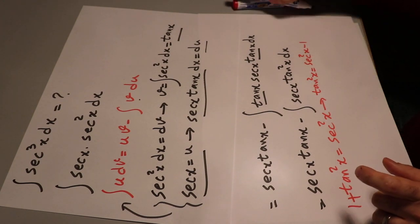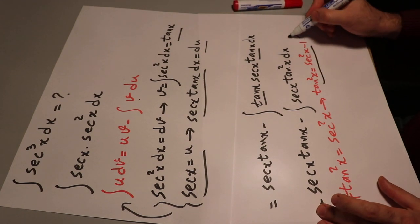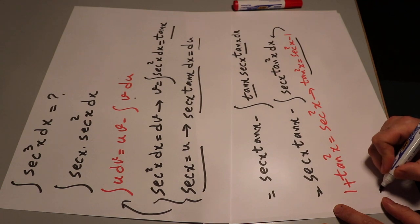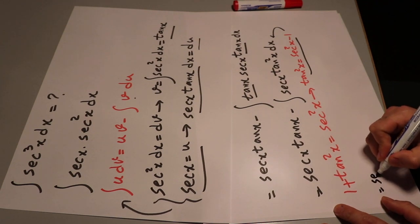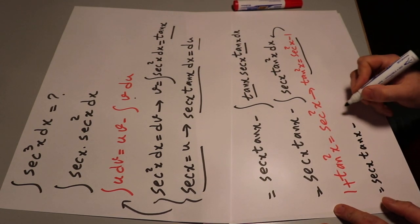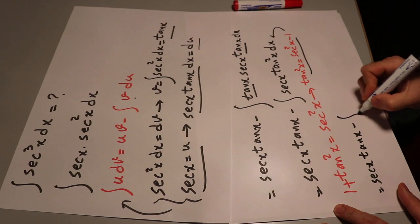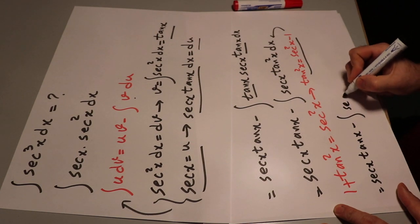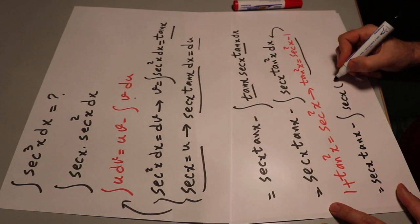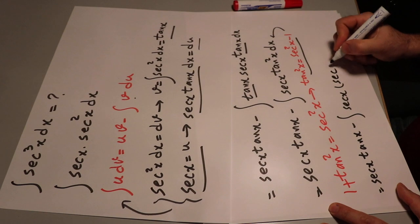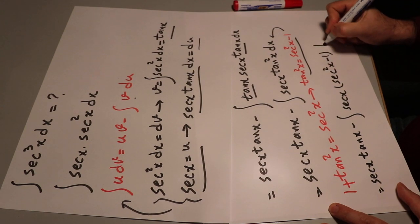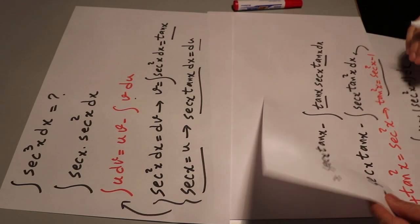So now you need to substitute this equation into this integral, therefore this will be equal to secant x tangent x minus the integral of secant x times, instead of tangent²x, I use secant²x minus 1, dx.